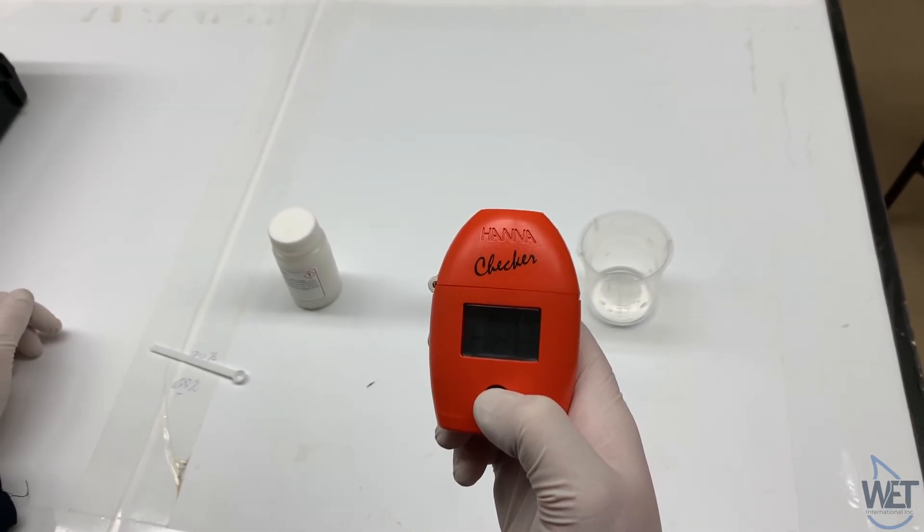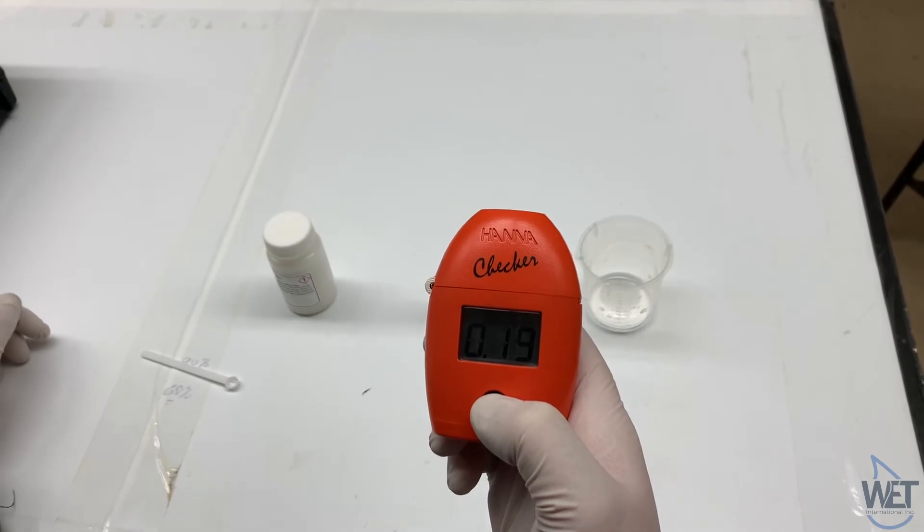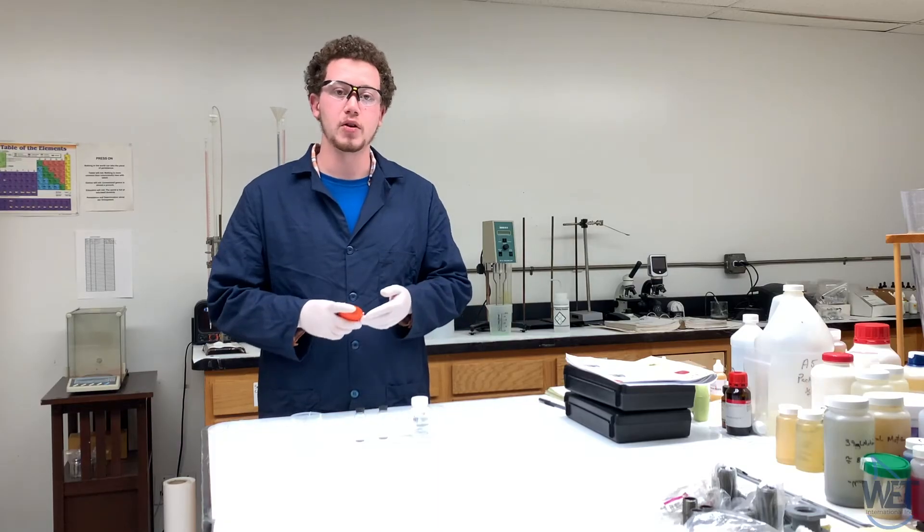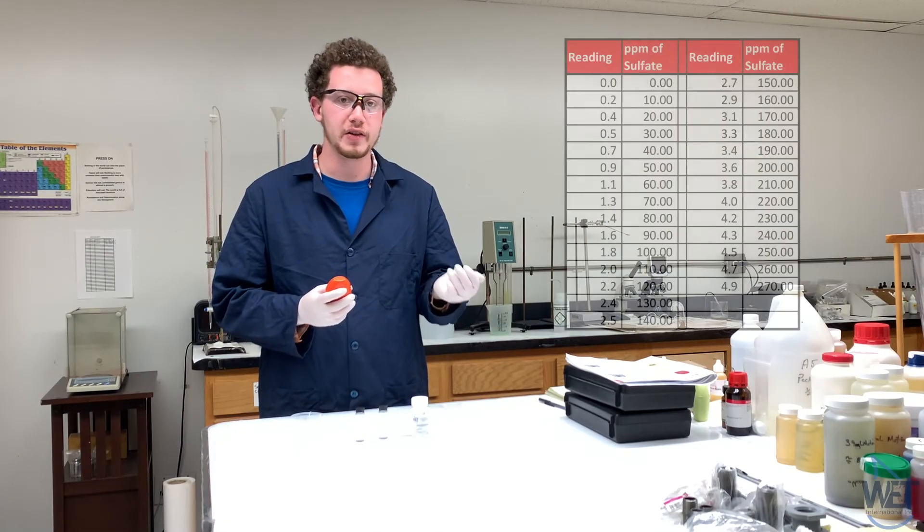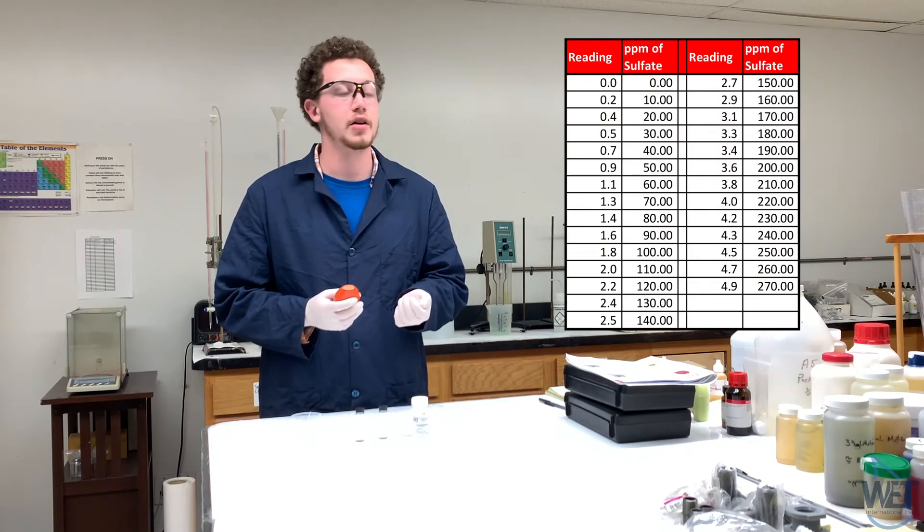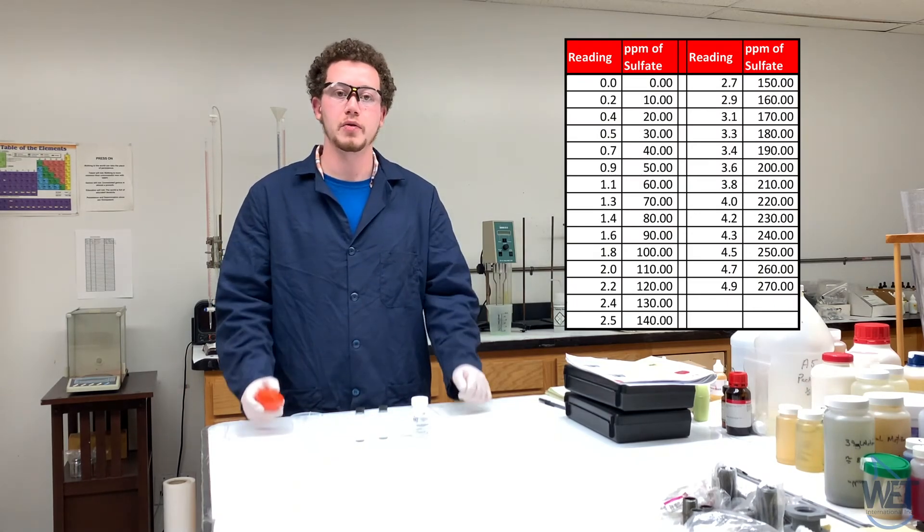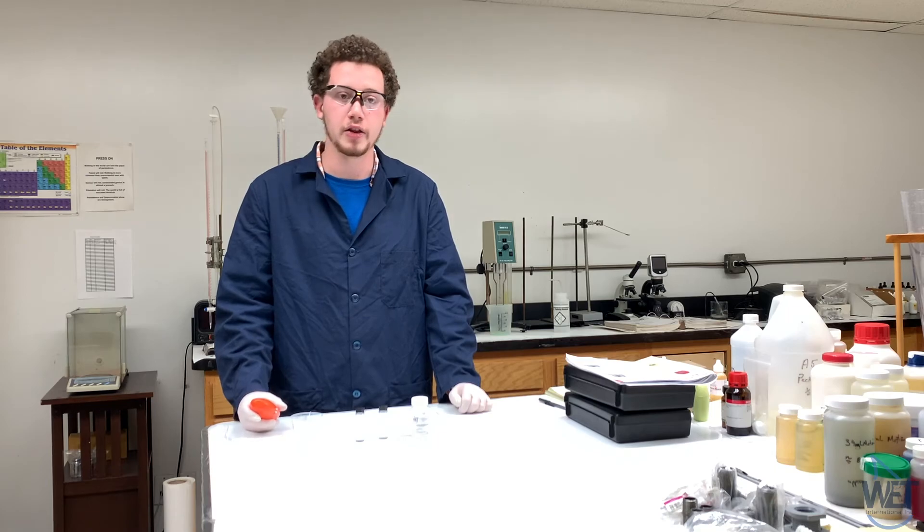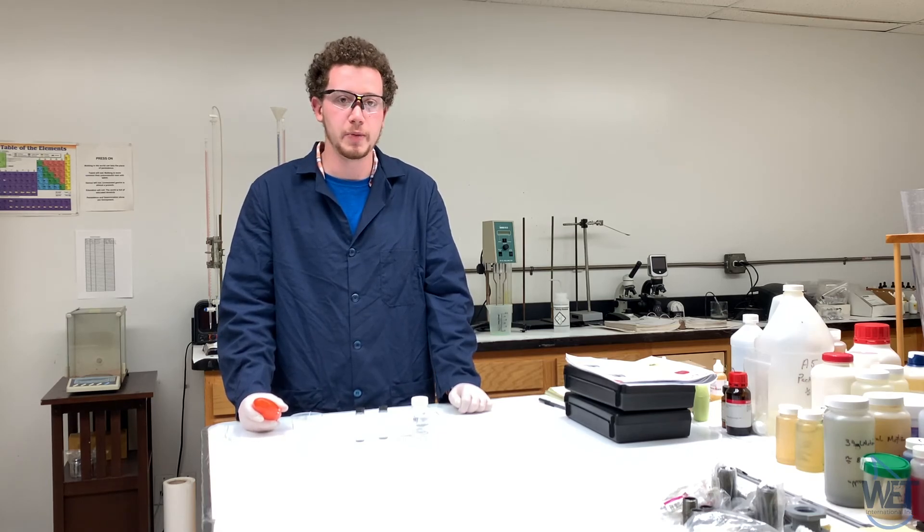In this case, we got 0.19. Using this value, we can take the table that's included in our test kit and compare the values, matching up the numbers. That will give us the results in ppm of sulfate.